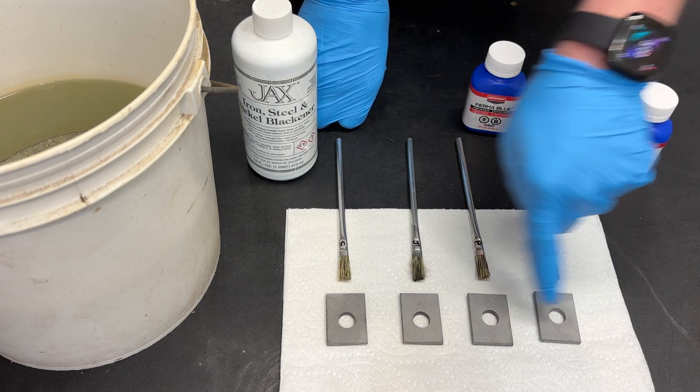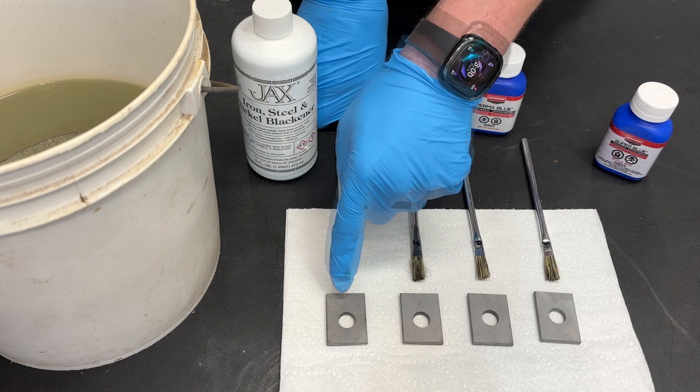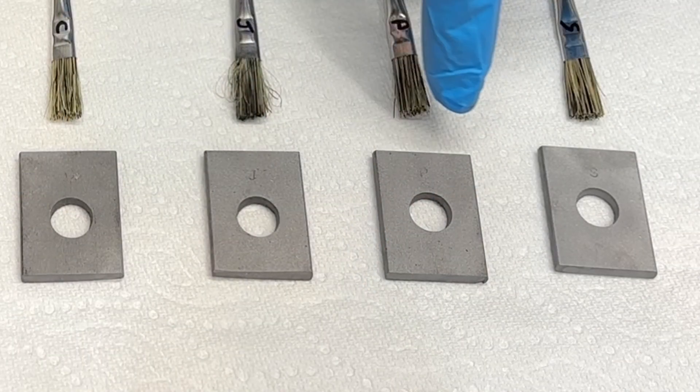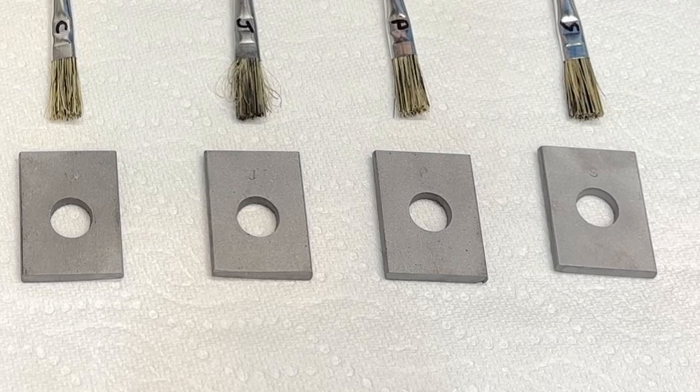So this is the setup. I have four pieces of steel here. You can see that they've been stamped. It's probably not super clear. It's a C on that one, a J on that one, a P on that one, and an S on that one.